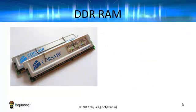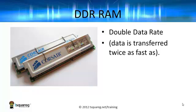On newer PCs, we have what's called DDR RAM, the DDR standing for double data rate. You can see from the term that something's being doubled. In fact, the data is transferred twice as fast, hence the term double data rate.